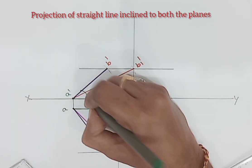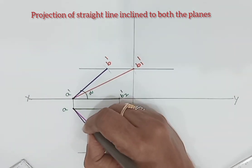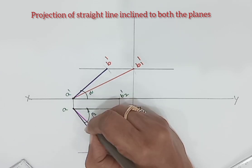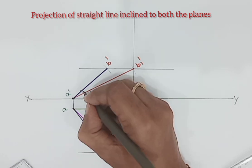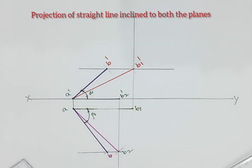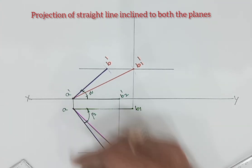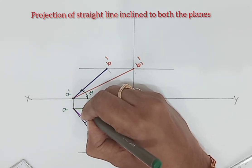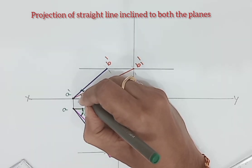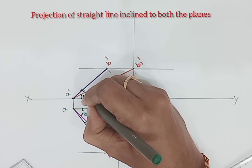Then alpha and this is beta, and this is phi and this is theta.